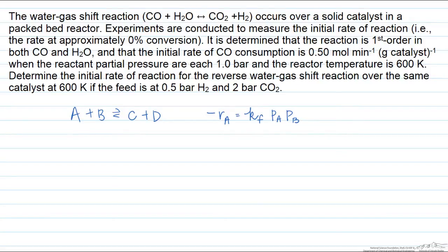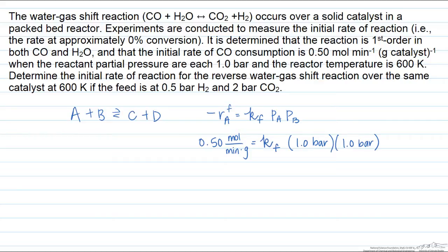We're given the rate of CO consumption under the case where we only have to worry about the forward reaction. That rate is equal to 0.50 mole per minute gram of catalyst, and that's equal to the forward reaction rate constant times each of the partial pressures, which are each equal to 1 bar according to the problem statement. This allows us to solve for the forward reaction rate constant, which equals 0.5 moles per bar squared minute gram of catalyst.